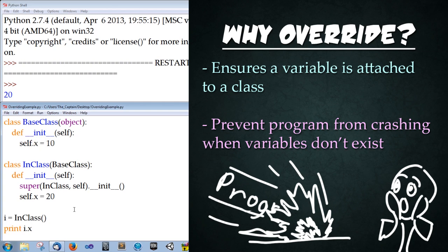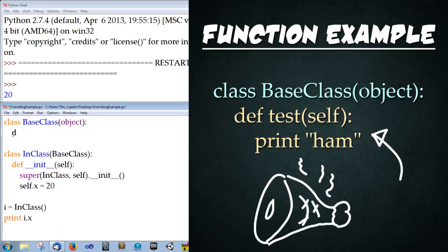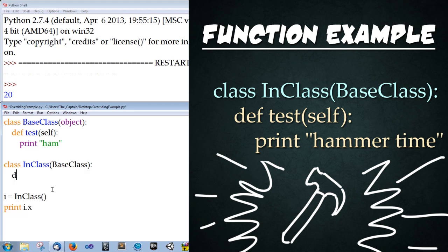So let's try another example by creating a test function within both of these classes. I'm just going to select the constructor of the base class and then type def test, open parenthesis, self, close parenthesis, colon, enter. And then just type print and then ham, just our code to function. In the inheriting class, we're going to do the exact same thing, test, self. And then after defining the function, we're going to type print, quotation marks, hammer time, in quotations, save.